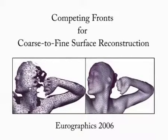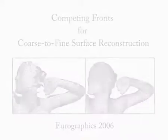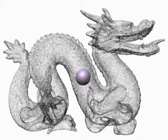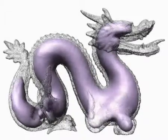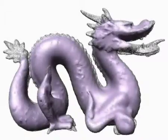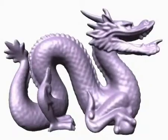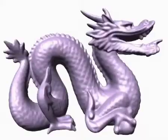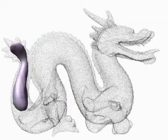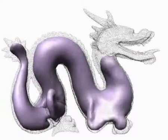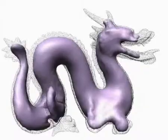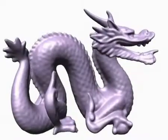Competing fronts for coarse-to-fine surface reconstruction. Given a point set sampled from a 3D object, we present an algorithm to reconstruct the object's shape using a deformable model. Our deformable model is represented as an unstructured triangle mesh which evolves to fit the target shape. Our goal is to bring the mesh sufficiently close to the target shape to ensure that the normal projection of the mesh to the target is injective. Our technique guarantees water-tightness of the result and allows simple tracking of topological events.